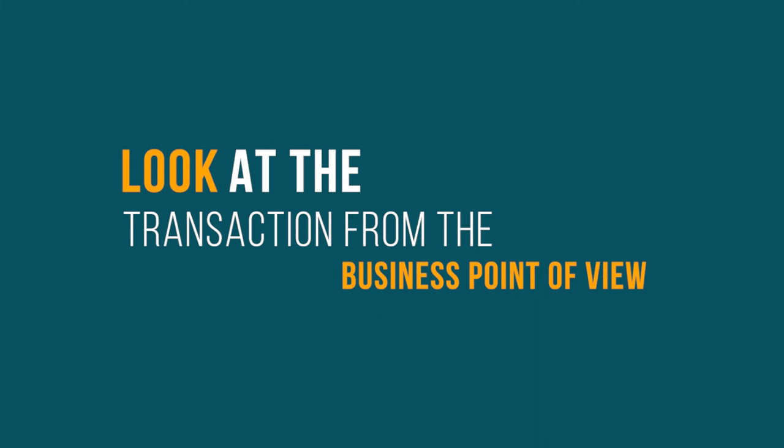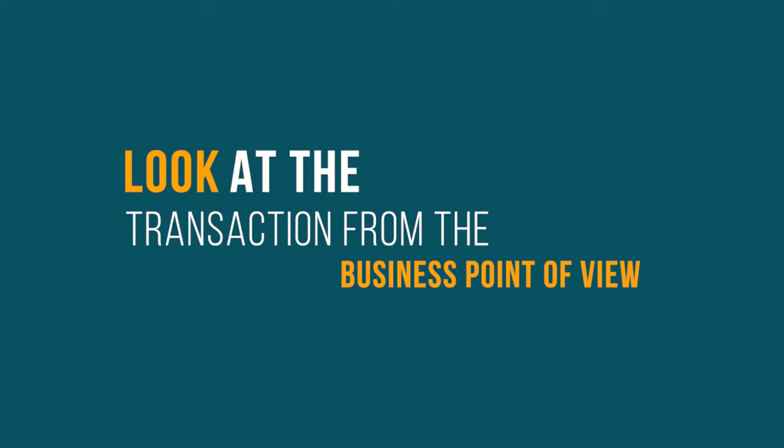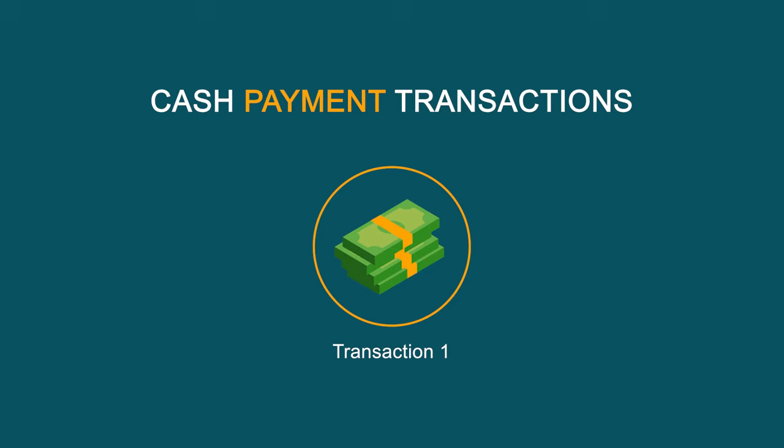Before we get practical, we first need to understand that when looking at these transactions, we need to look at them from the point of view of the business. When looking at assets and owner's equity, remember we are viewing from the viewpoint of the business. When reading through a transaction, you should always ask yourself: what happened? For this lesson, we will be looking at cash payment transactions only.